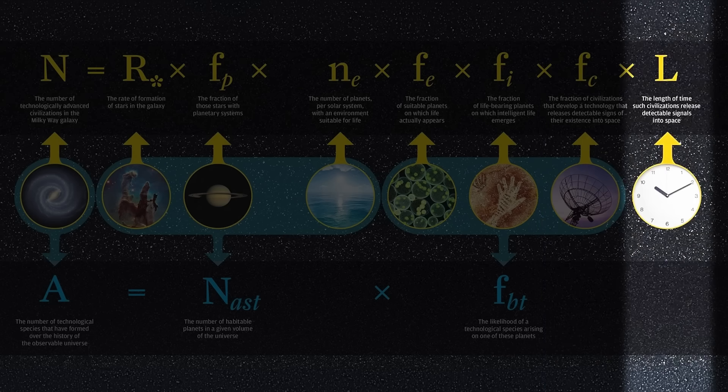The last term, which is the one we really care about, is the lifetime — how long does a civilization last? We humans are staring down nuclear war, climate change, AI... so how long do civilizations generally last? What was brilliant about what Drake did was he was quantifying our ignorance. By breaking the problem into these seven sub-problems, he gave astronomers something to do — a research program, not just vague questions.